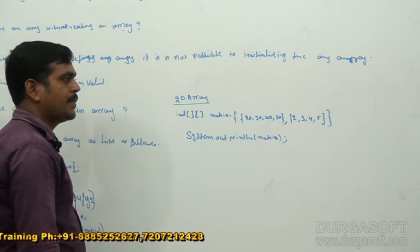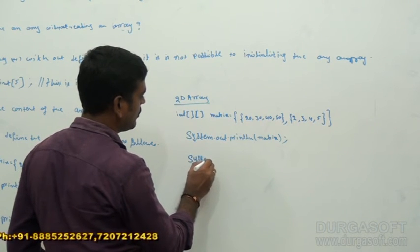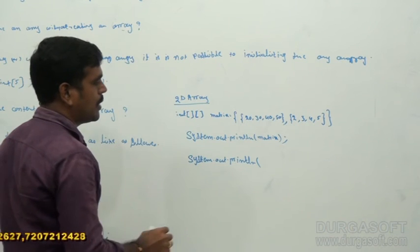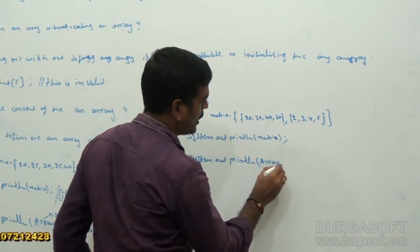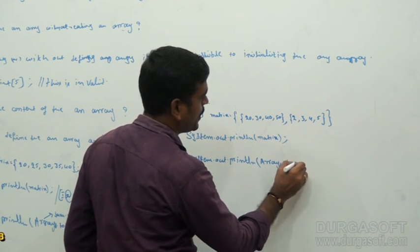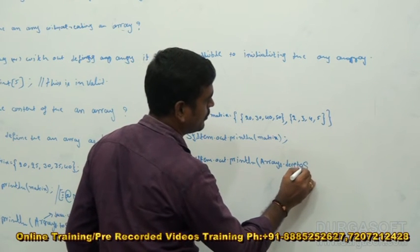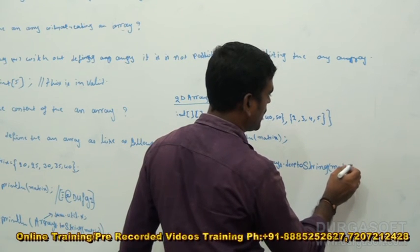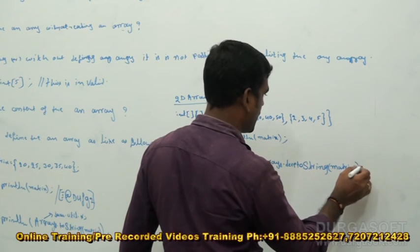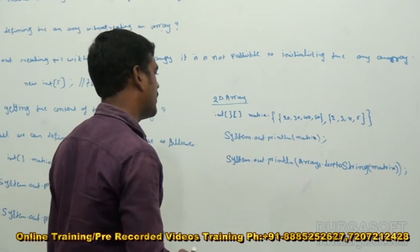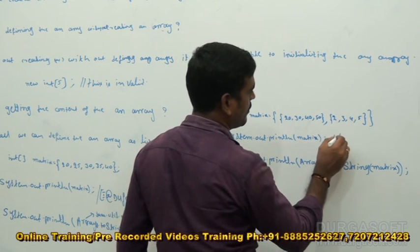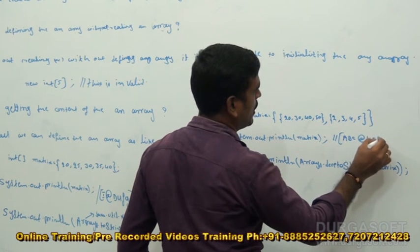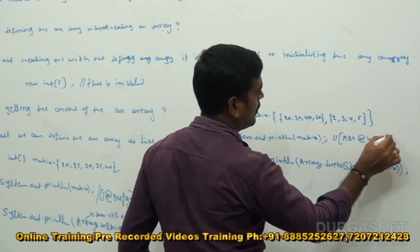Now, if you want to print the content of the two-dimensional array, what we have to do? We use System.out.println(Arrays.deepToString(matrix)). When we pass the matrix here, it is going to print the actual content.